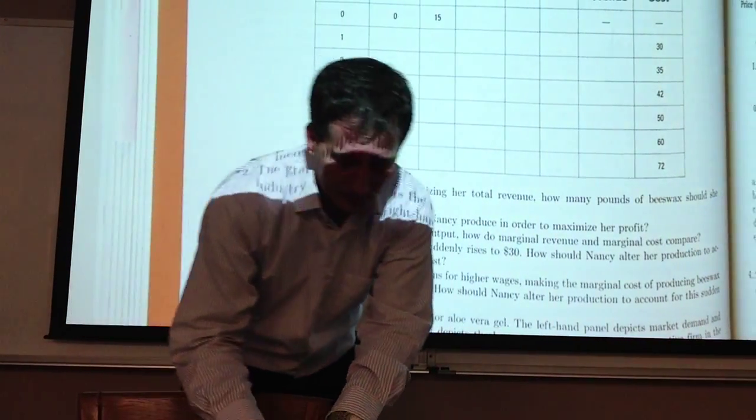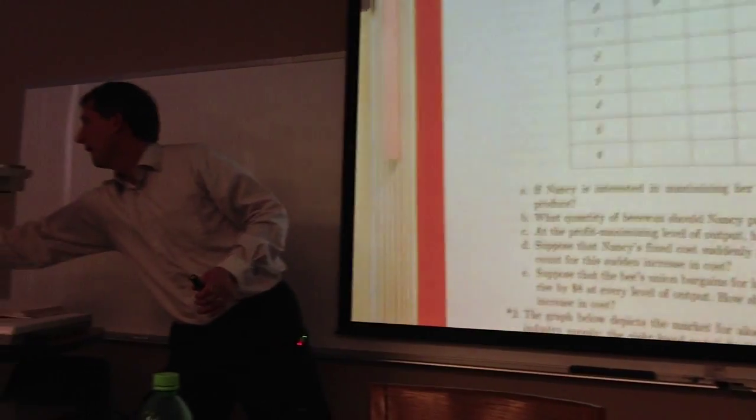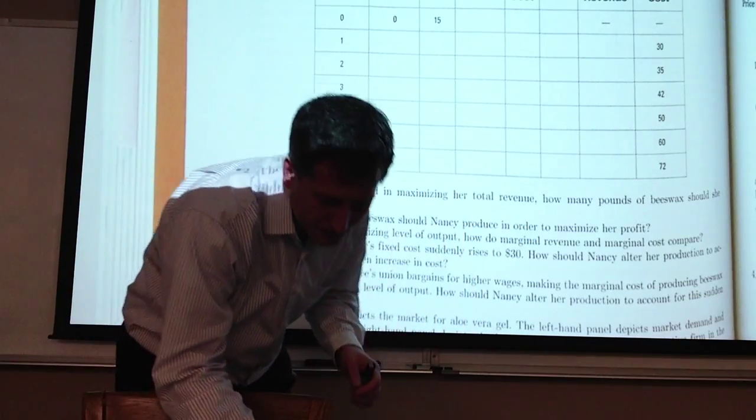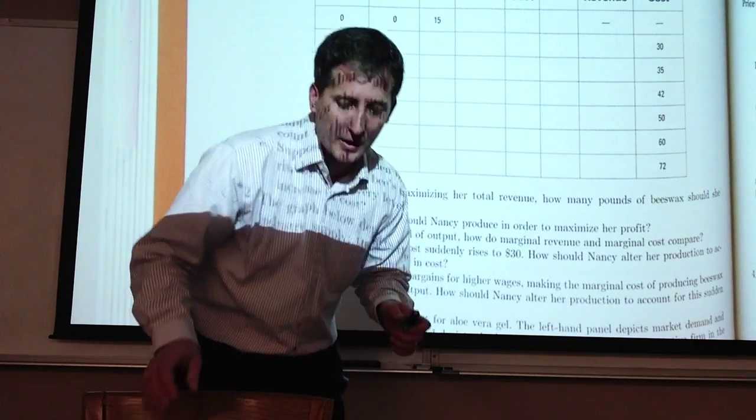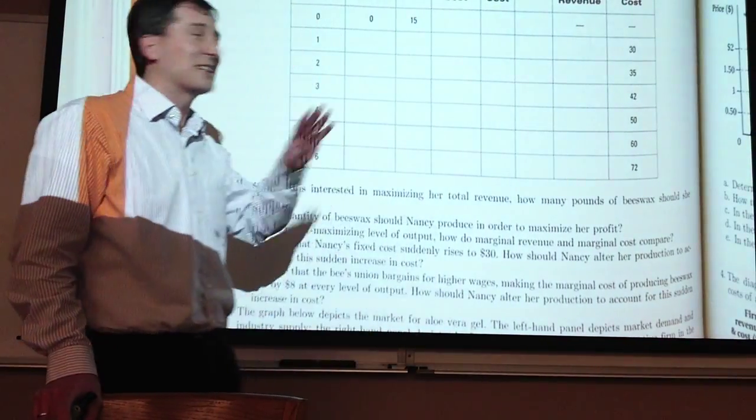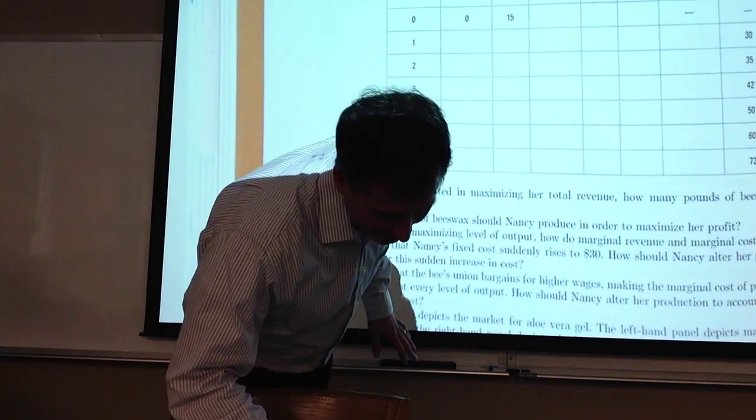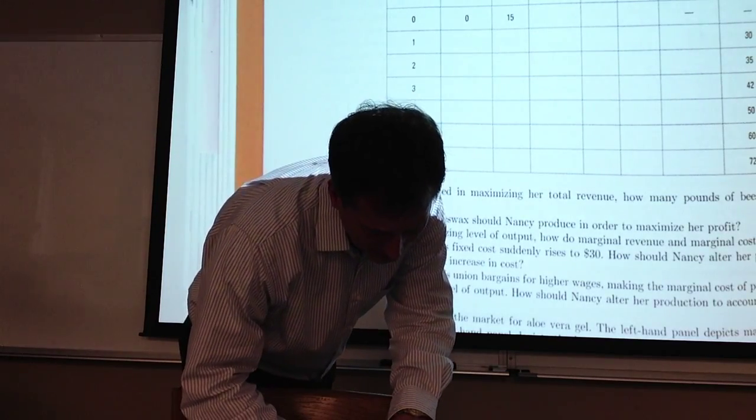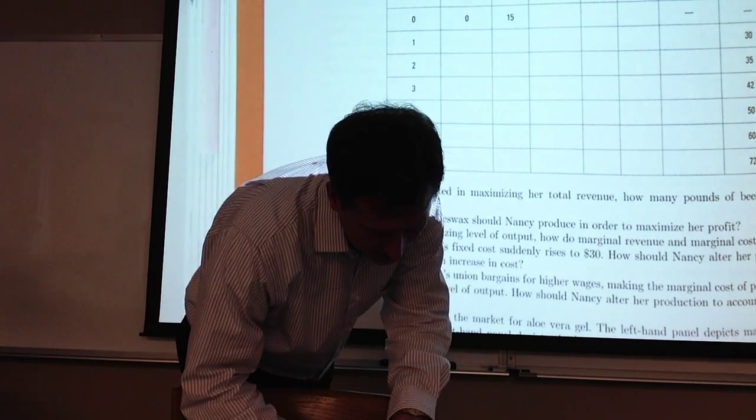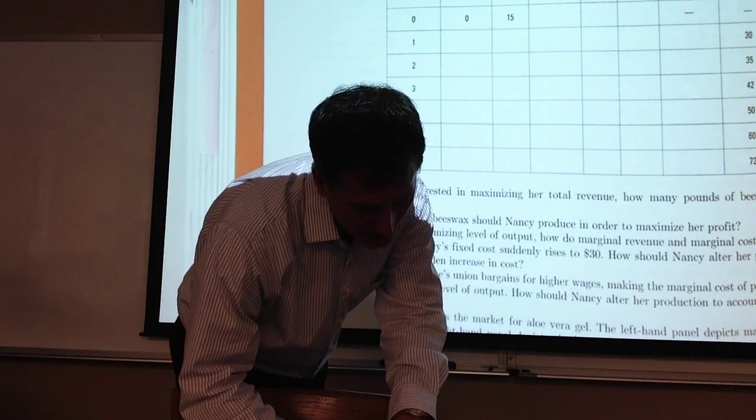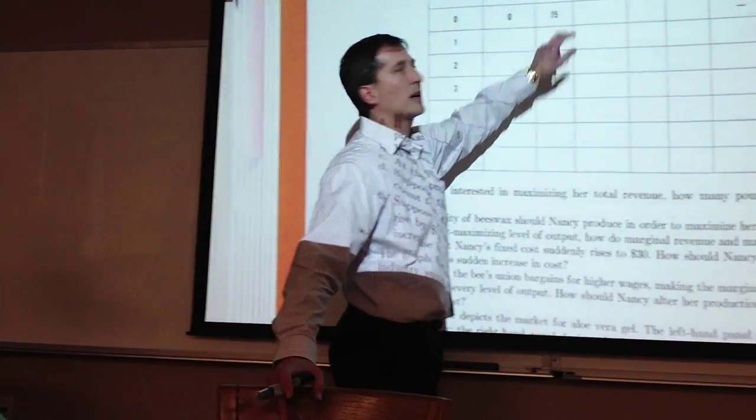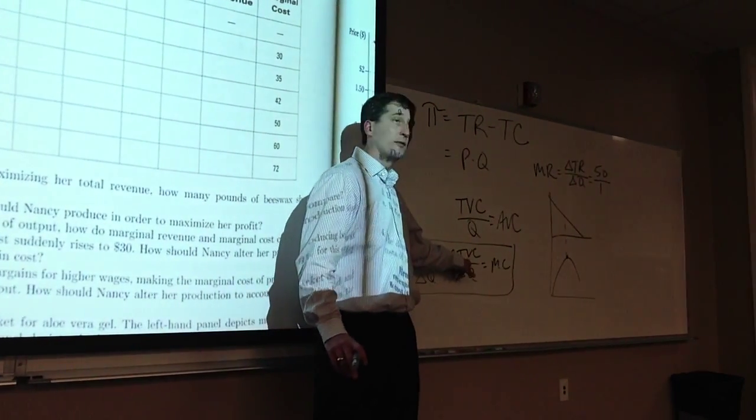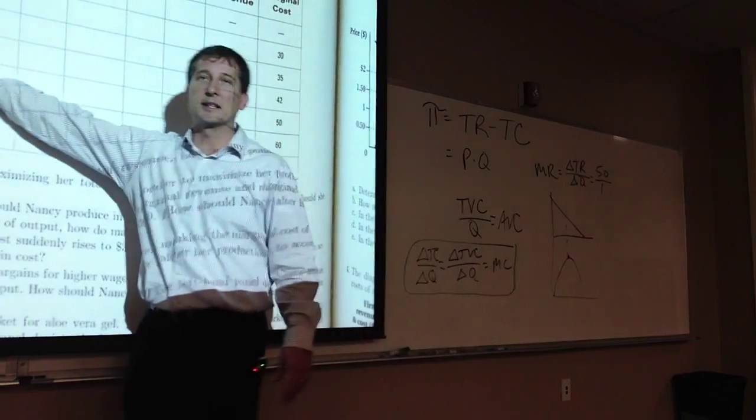What quantity of beeswax should Nancy produce to maximize her profit? How does Nancy maximize profit? Marginal revenue equals marginal cost. So produce four units. In the answer key it says Nancy's maximum profit is $28. Let me double check my work. Yeah, that's correct.